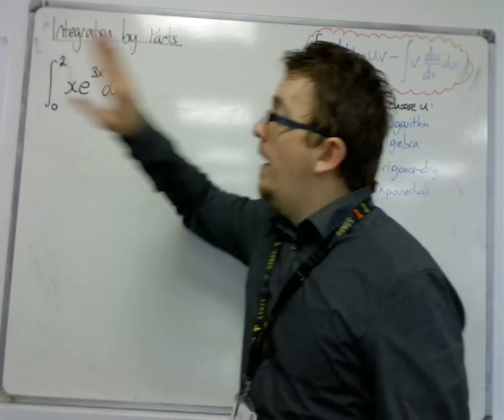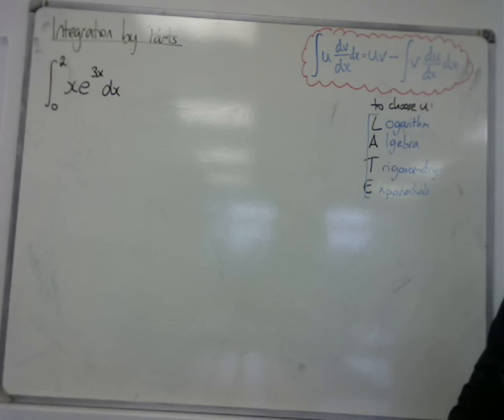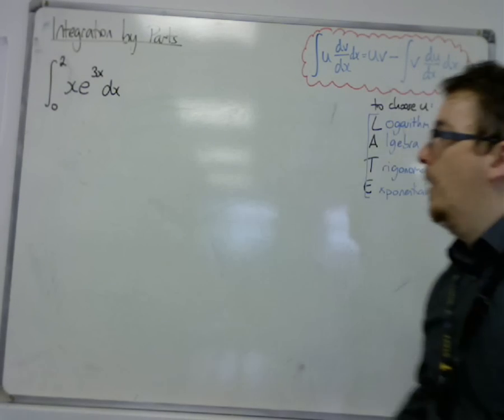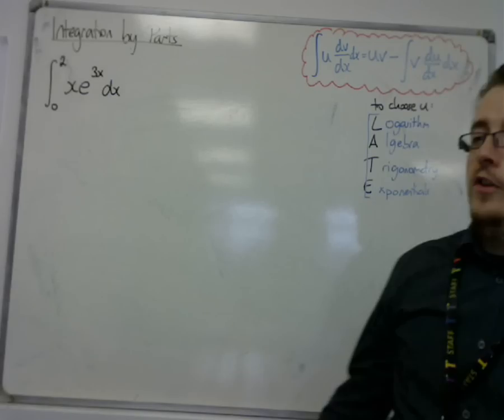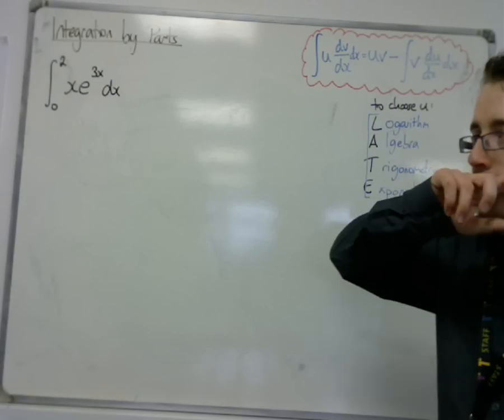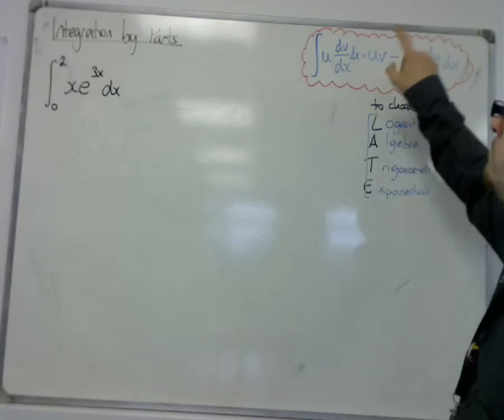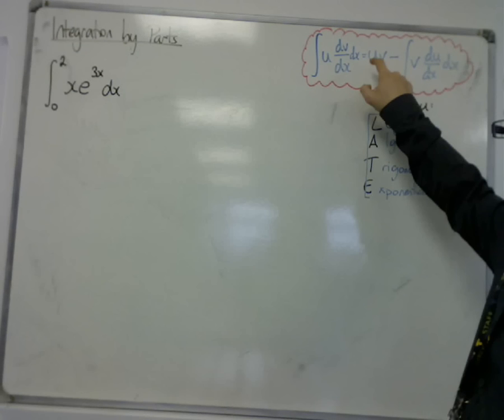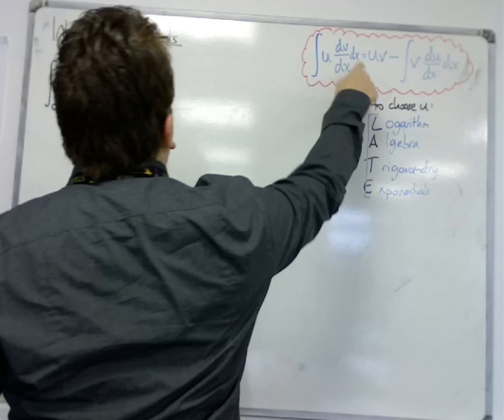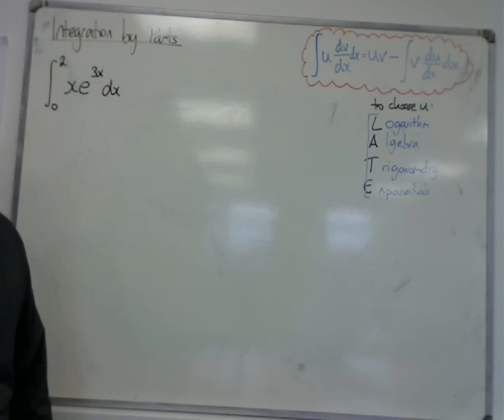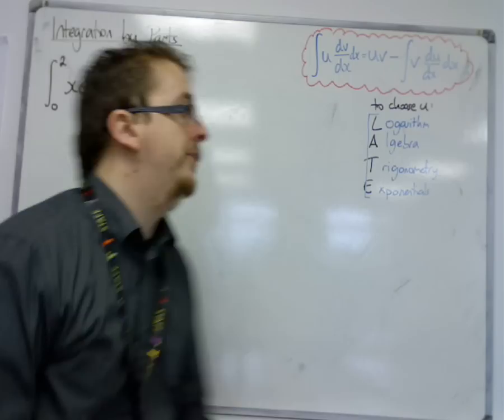So what happens when we have limits on the integral? We have a definite integral this time. That's going to be our problem because the formula that we're given in the formula booklet has no limits on it. So we're going to have to make sure that we understand how this is going to work.